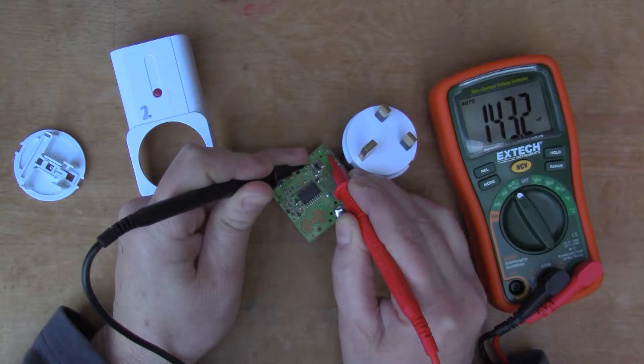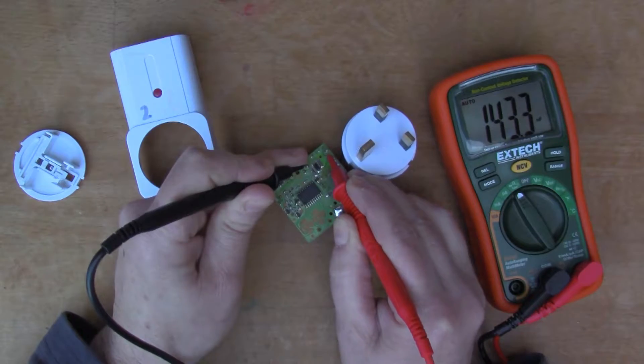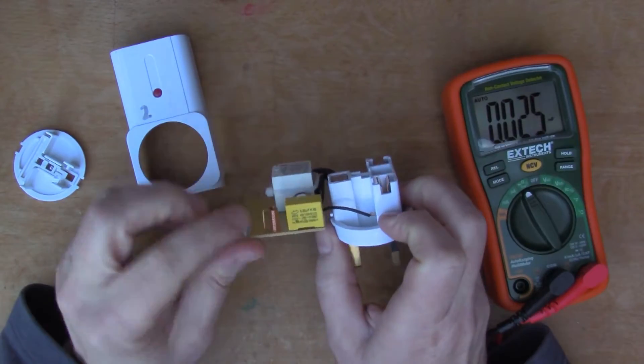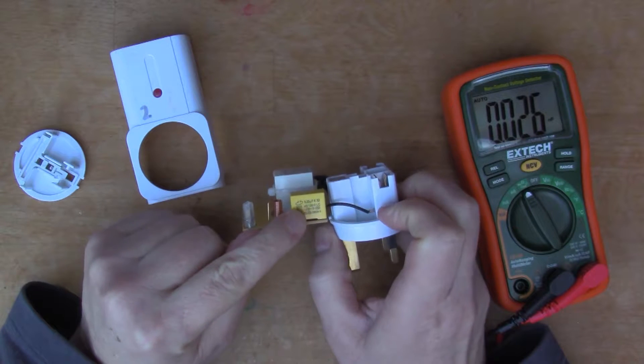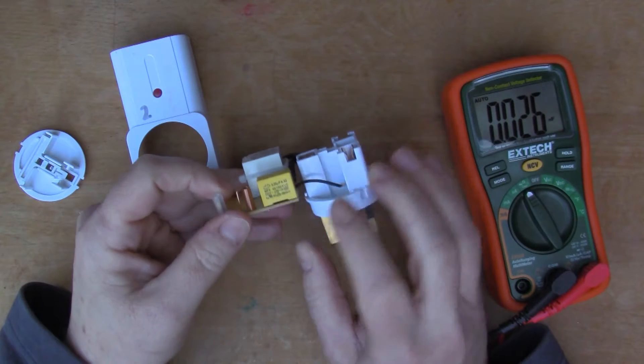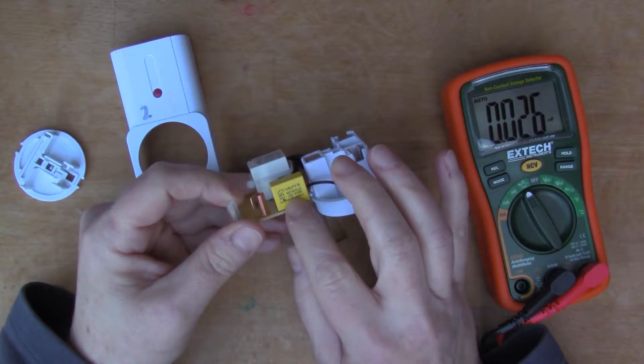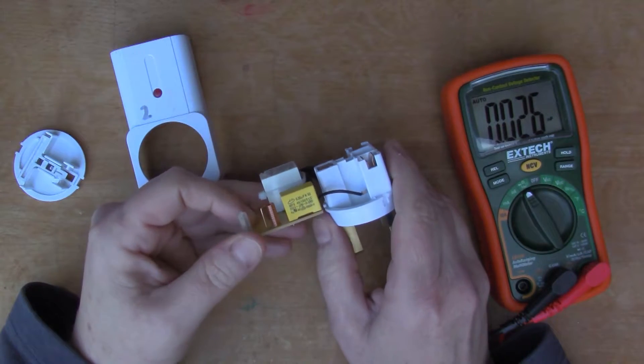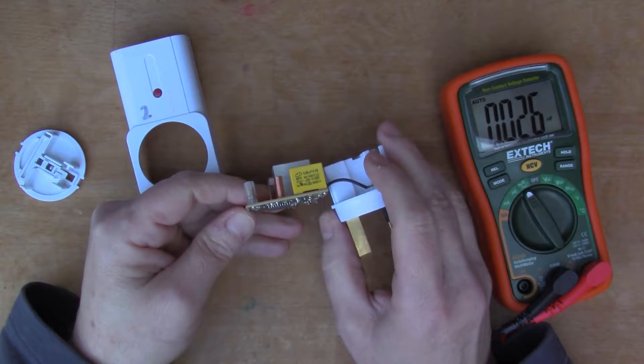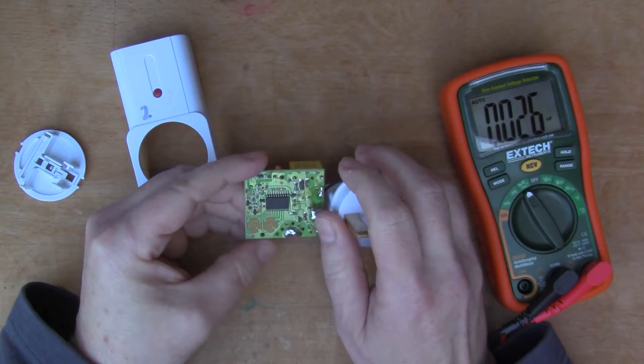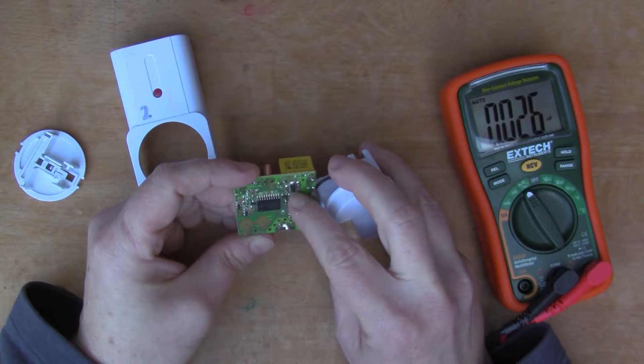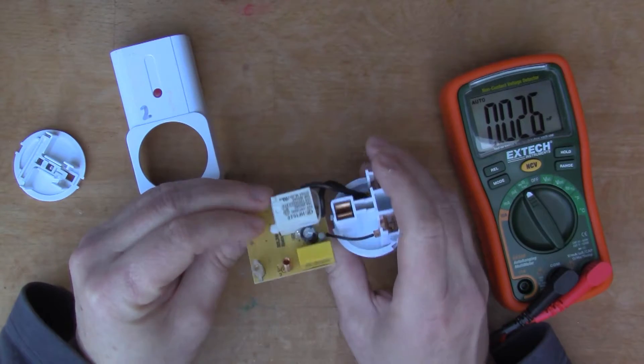143 nanofarads. This is meant to be 0.33 microfarads, which is 330 nanofarads. So this is approximately half the value that we expect, which maybe indicates why it's a little bit intermittent. Maybe the voltage here is on the edge of what the relay can tolerate.